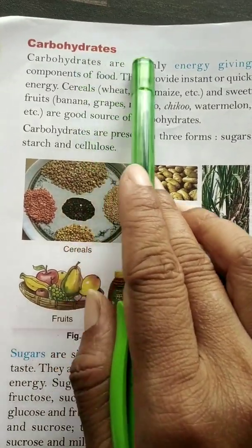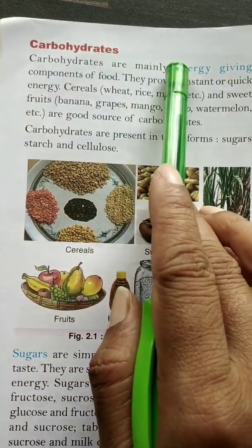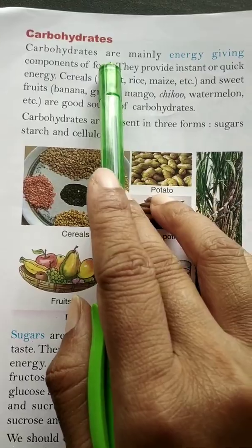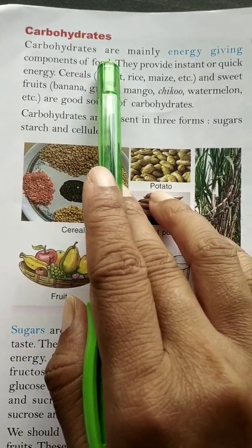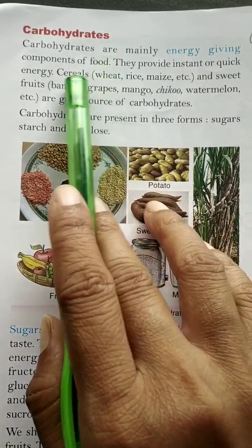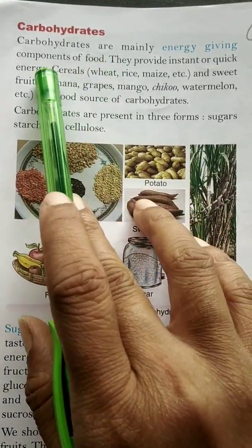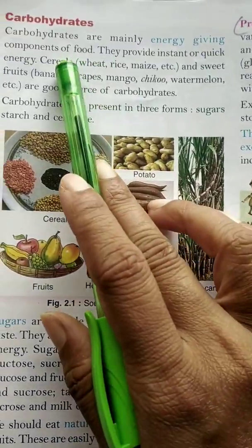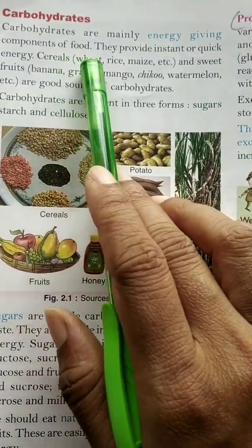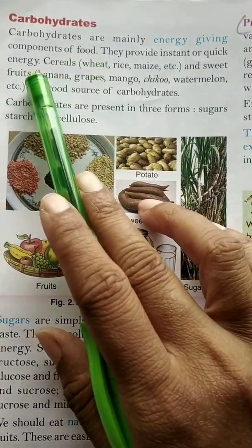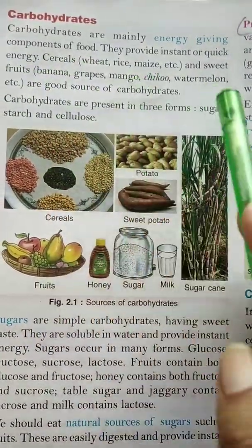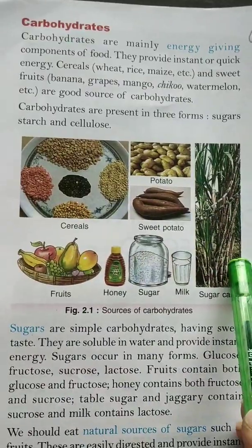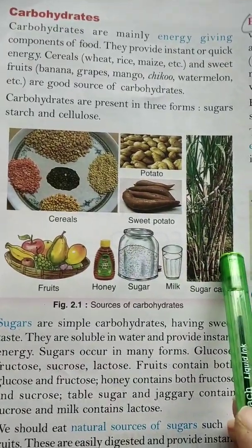Carbohydrates are mainly the energy-giving component of the food. They provide constant, instant, quick energy. We obtain them from cereals and various fruits and other sources. Here, the sources of carbohydrates are given.